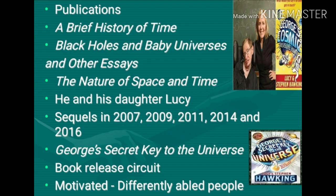In 1993, he wrote a book which contained a few autobiographical elements: Black Holes and Baby Universes and Other Essays. In 1996, he and his friend Sir Roger published The Nature of Space and Time. In 2007, he and his daughter Lucy released sequels in 2009, 2011, 2014, and 2016 for their children's biographical book, George's Secret Key to the Universe. Despite deteriorating health, he attended book release circuits, motivated differently-abled people, and was praised by them as a hero.